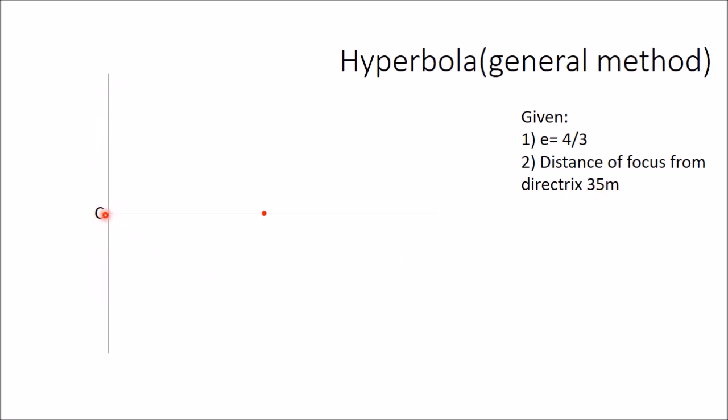So this distance is 35mm and this point is F, which is the focus of the hyperbola. Now this line CF should be divided into some equal number of parts.